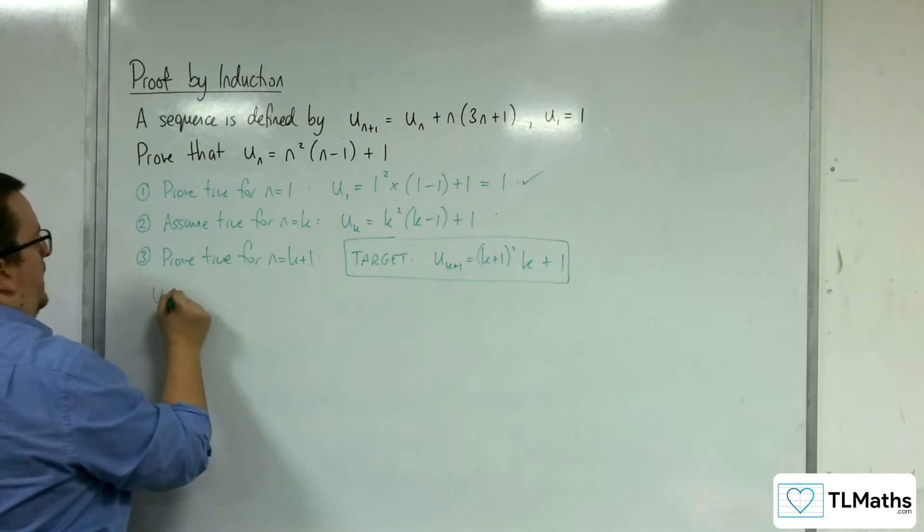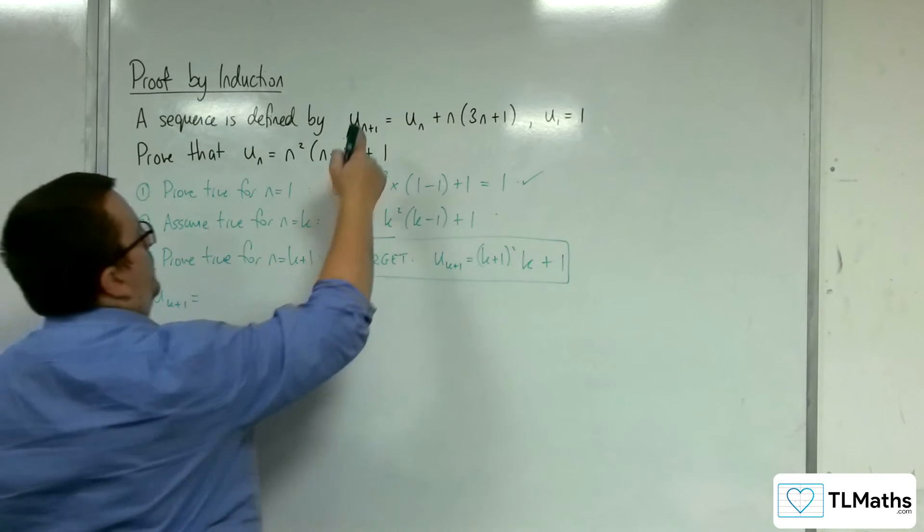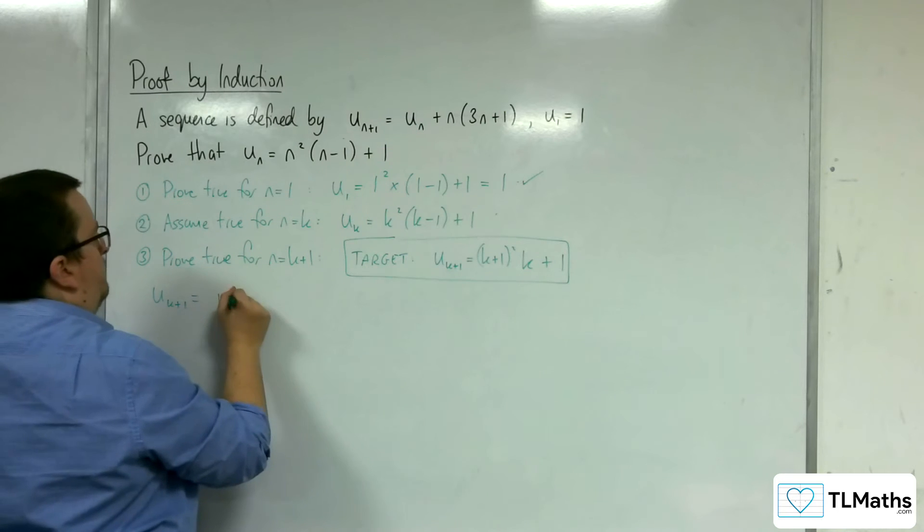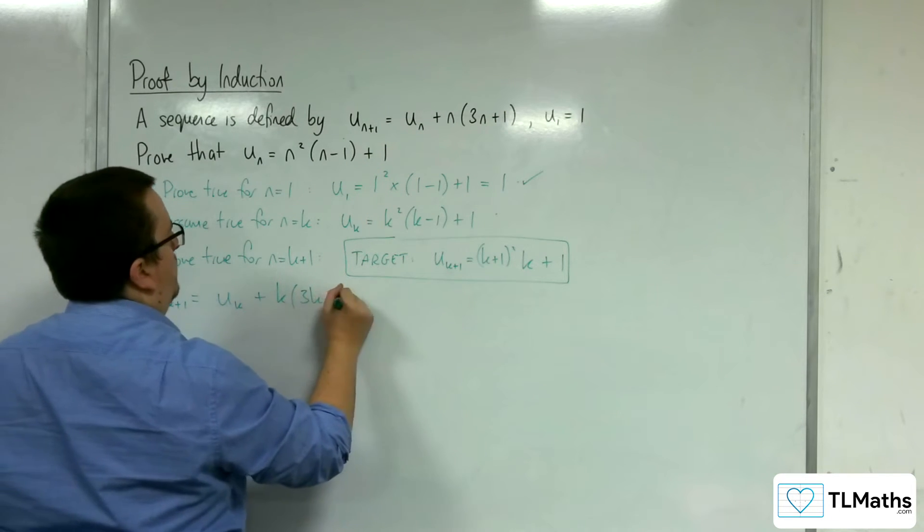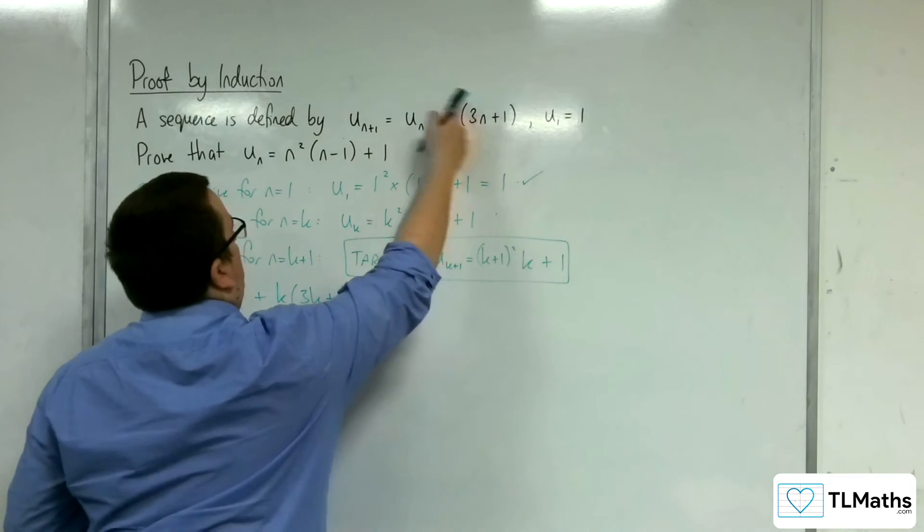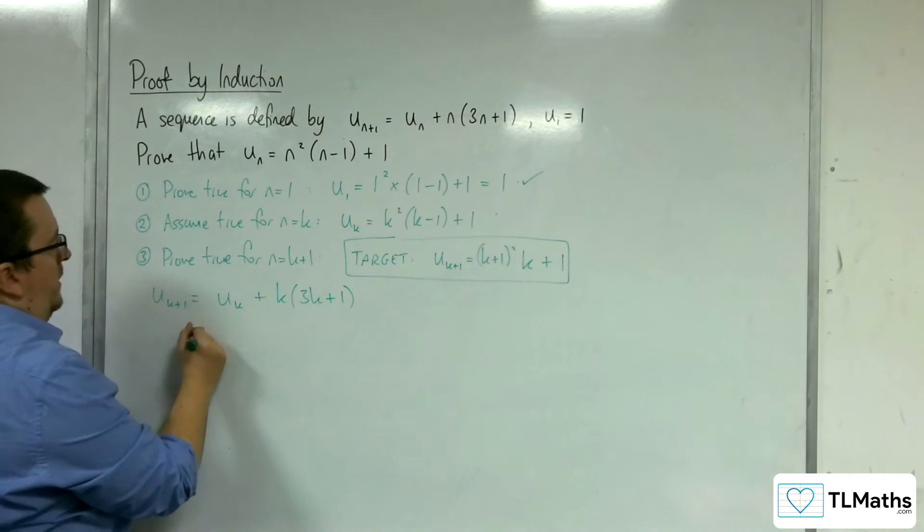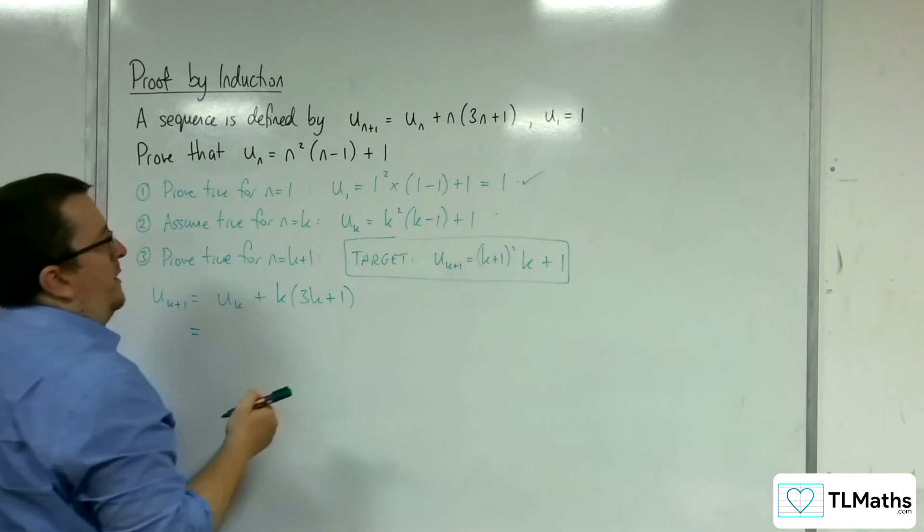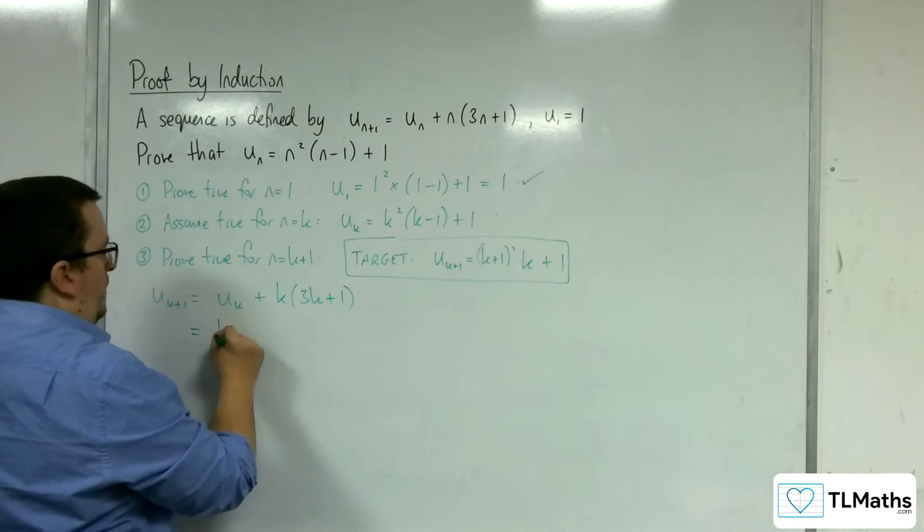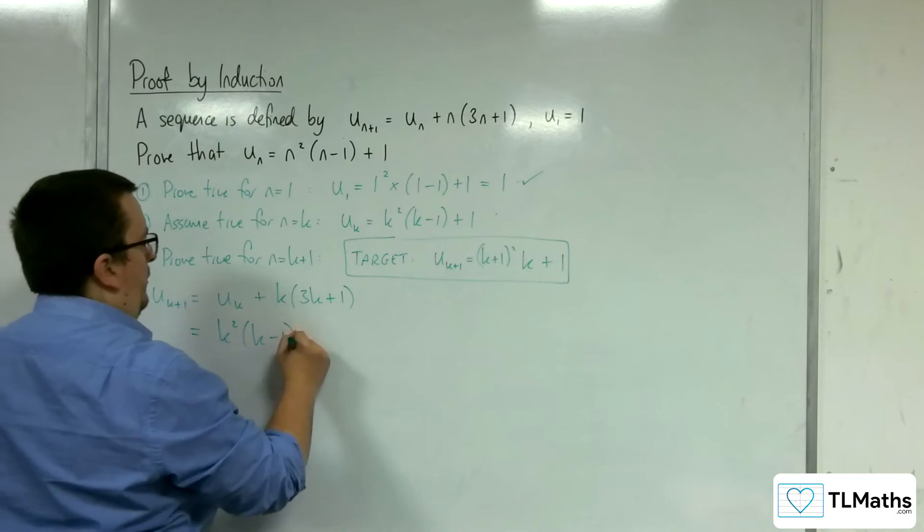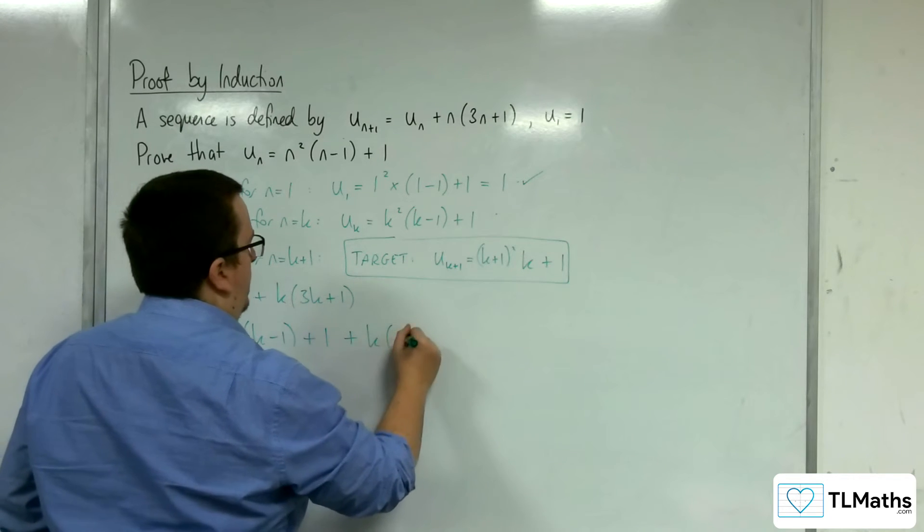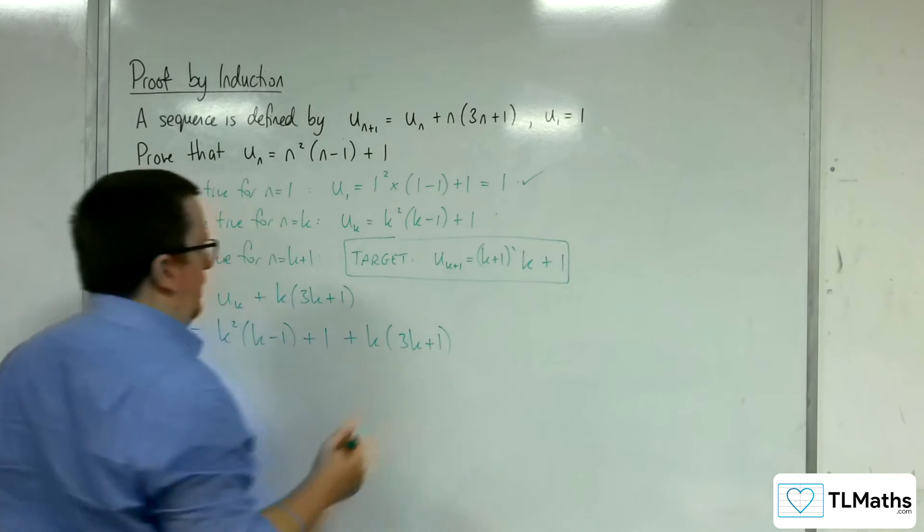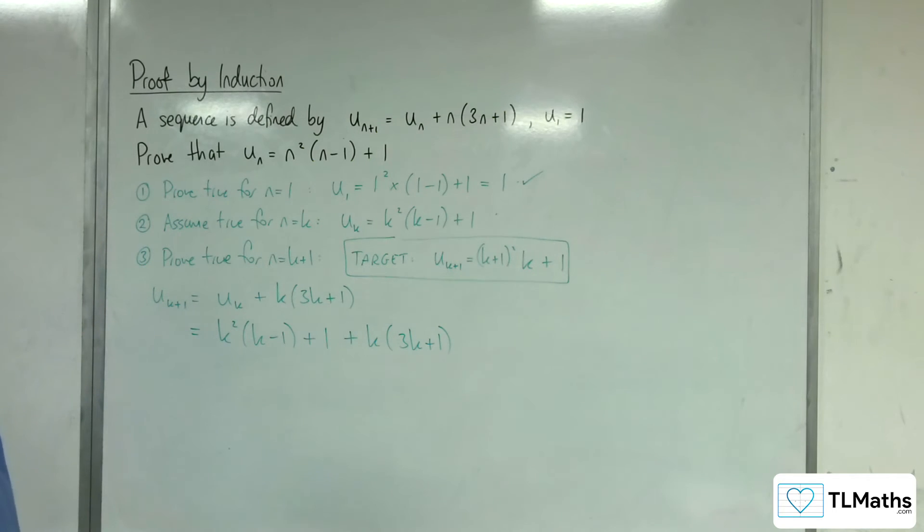So u_{k+1} equals u_k plus k(3k+1), so substituting k into this. Now the u_k, remember, is this k²(k-1) + 1, so k²(k-1) + 1. And we've got this plus k(3k+1) also.